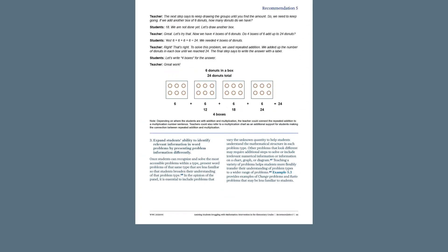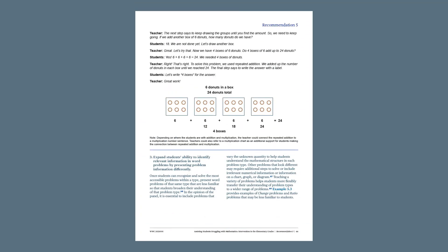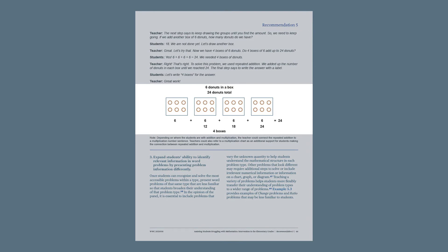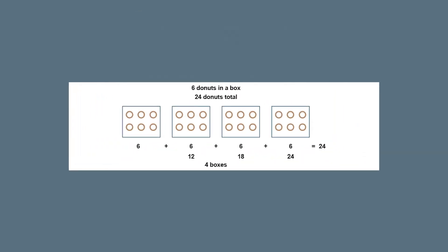After the teacher helps students understand the problem type, the second action step is to teach students a solution method for solving that problem type. Solution methods can include graphic organizers, diagrams, tables, or equations that link to the problem type by connecting to and representing the problem type's key underlying mathematics event.